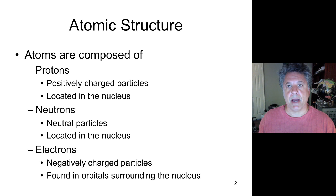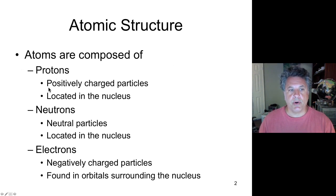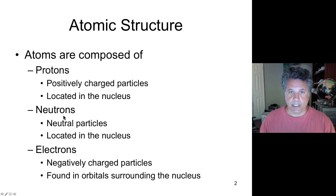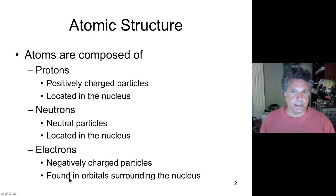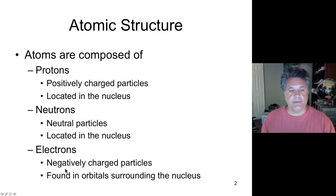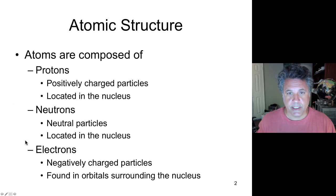Let's talk about atomic structure. Atoms have protons in the nucleus — protons are positively charged particles. Neutrons are also found in the nucleus and they have no charge; they are neutrally charged. Electrons are negatively charged particles found in orbitals that surround the nucleus. The electrons are negatively charged and the protons are positively charged, and their charges are equal, but the mass of an electron is about 1800 times smaller than a proton.